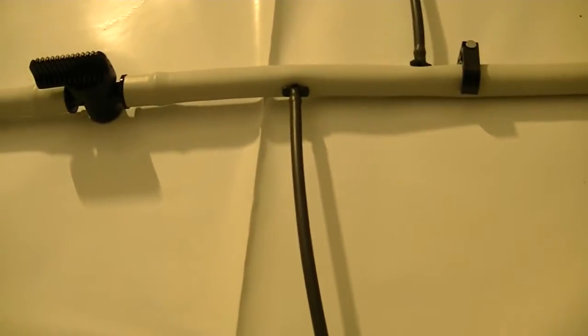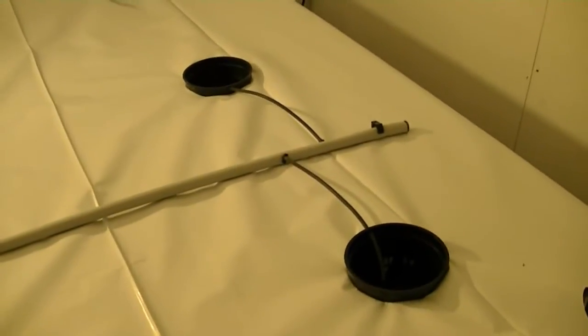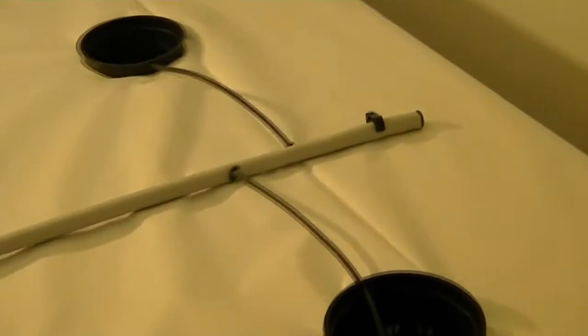You just pop a hole in the mainline with a hole puncher and pop the nipple in there. Then you run a quarter-inch drip tube or spaghetti tube from the nipple to the basket. I always cut them off halfway just to make sure they don't flip out and drain all over the place.